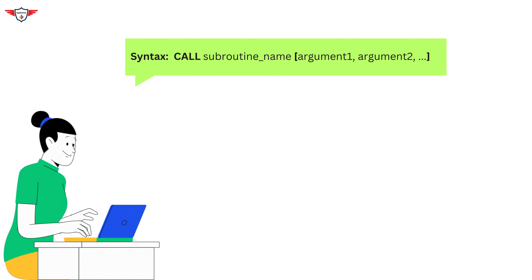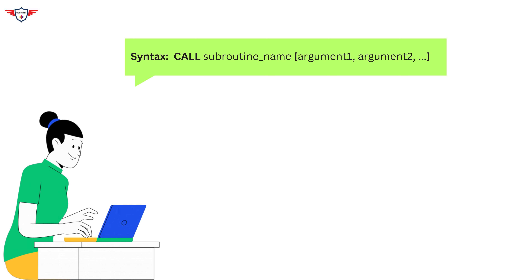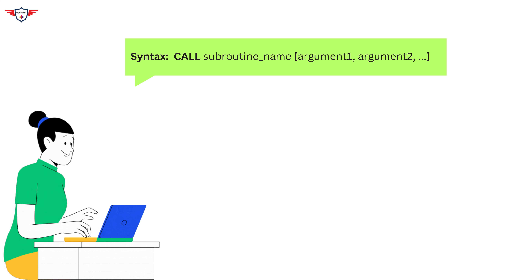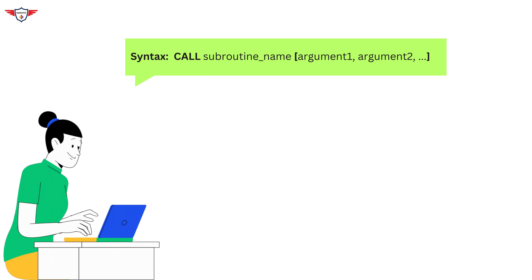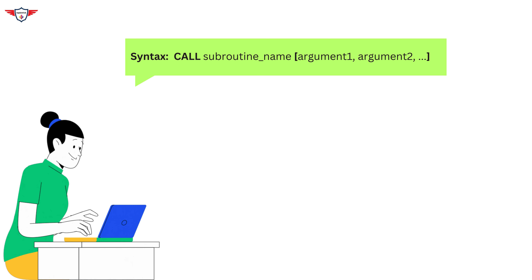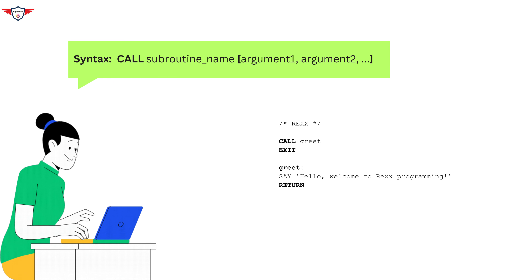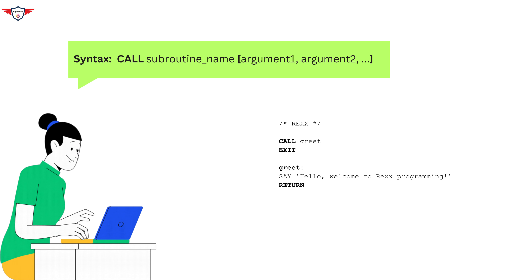Now let's talk about the syntax of the call statement. In this syntax, you have the call keyword, which is a reserved keyword in RECS. After that, you have the subroutine name — the name of the subroutine you wish to call. And after that, you have arguments, which are optional parameters that you can pass to the subroutine when calling it to perform a specific task.